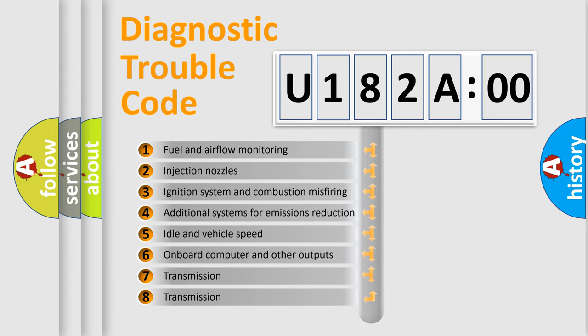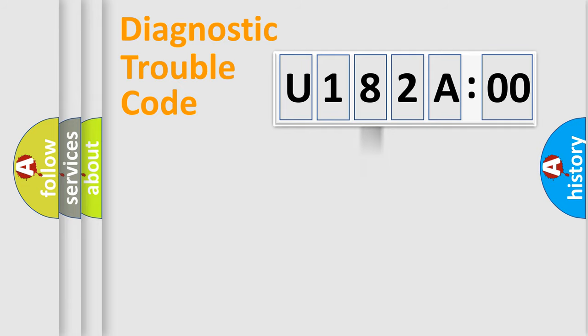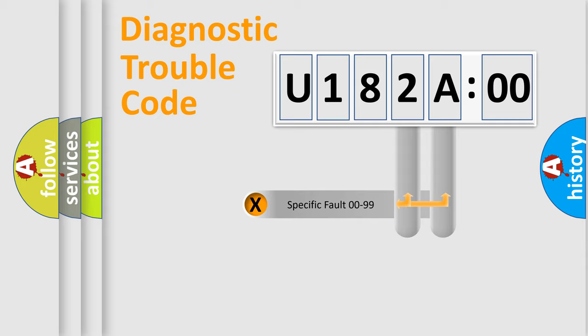The third character specifies a subset of errors. The distribution shown is valid only for the standardized DTC code. Only the last two characters define the specific fault of the group.